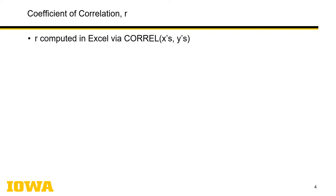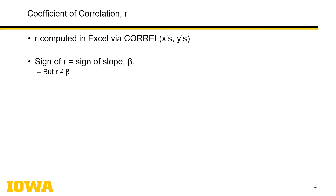How do we go about getting this value? Thanks to software, we can go to Excel. There's a function called CORREL. You just put in the column of x values, follow it with a comma, highlight the column of y values, put a bracket at the end, and hit Enter, and you'll get the number.